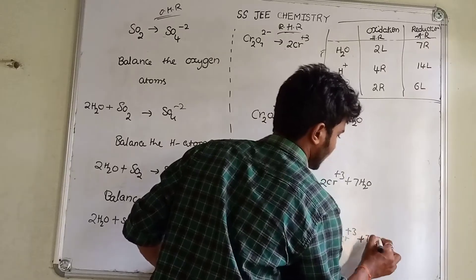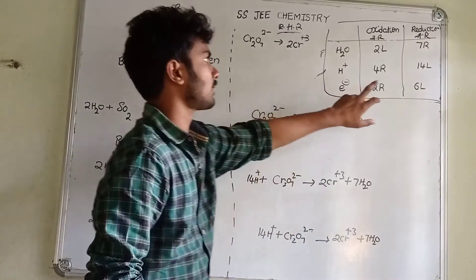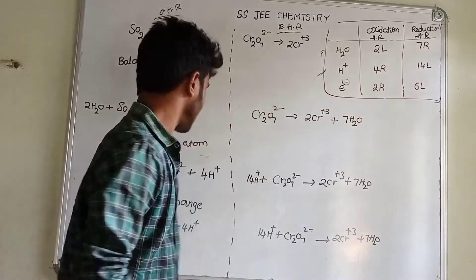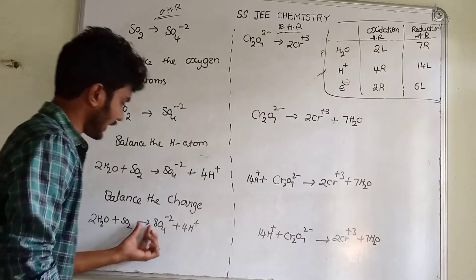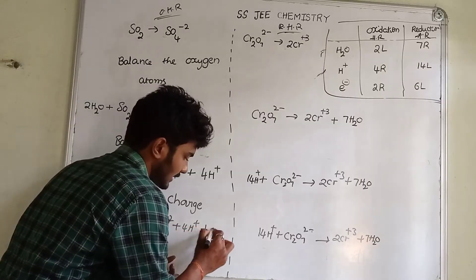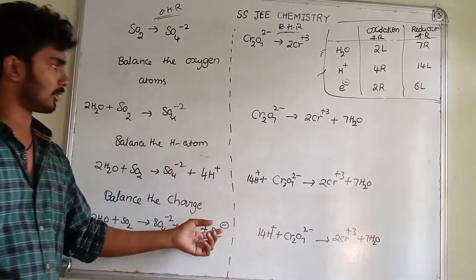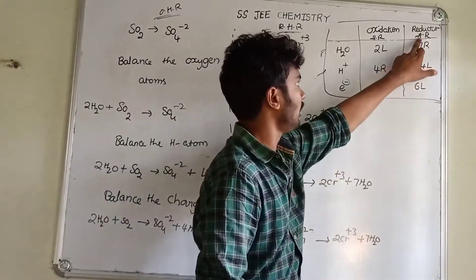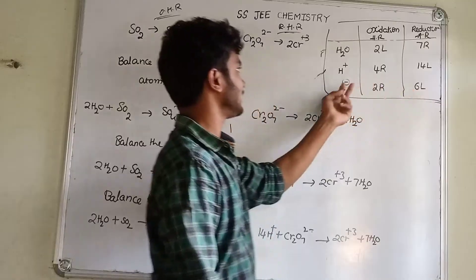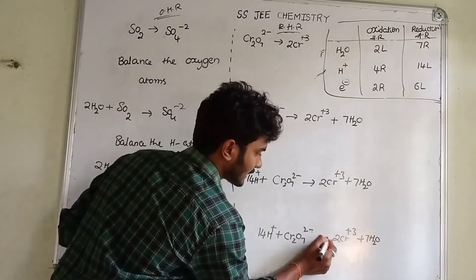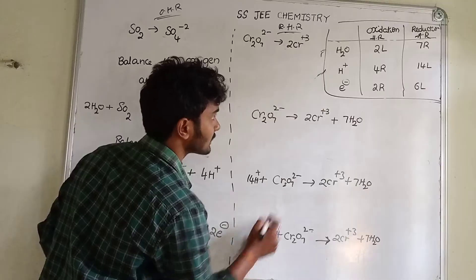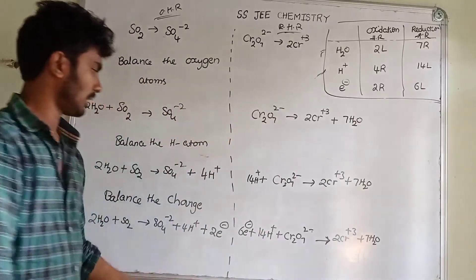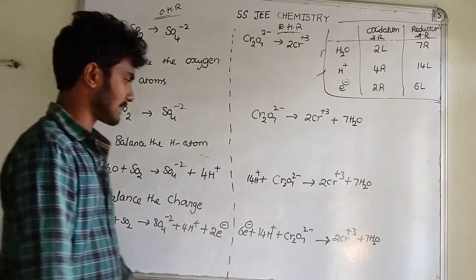This depends on the electrons. Six electrons have changed. Oxidation half-reaction right side: 2 electrons. Next, reduction half-reaction left side: 6 electrons. Left side, 6 electrons.